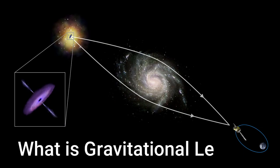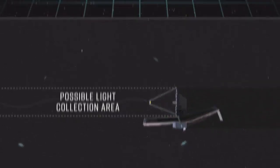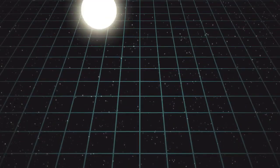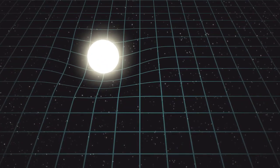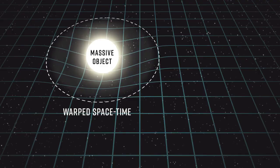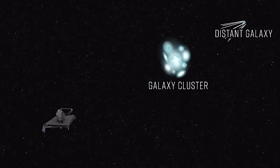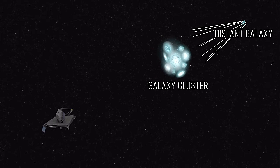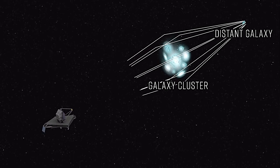So what is gravitational lensing? Gravitational lensing is a phenomenon predicted by Albert Einstein's theory of general relativity. It occurs when the gravitational field of a massive object, such as a galaxy or a galaxy cluster, bends the path of light as it travels through space. This bending of light creates a lensing effect where the massive object acts as a gravitational lens.